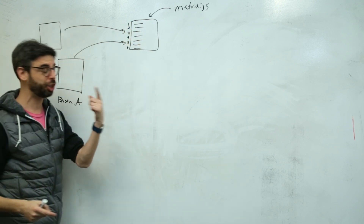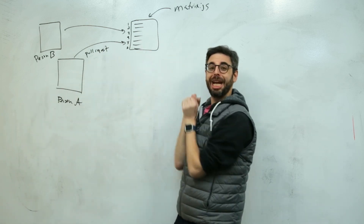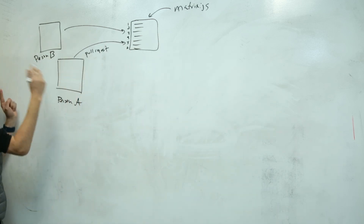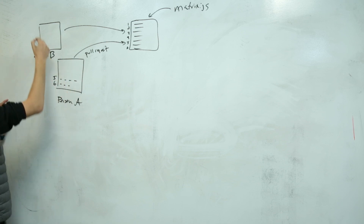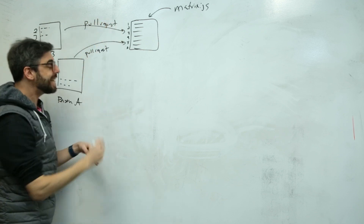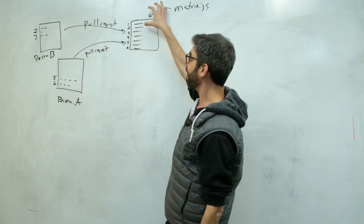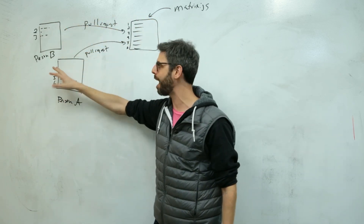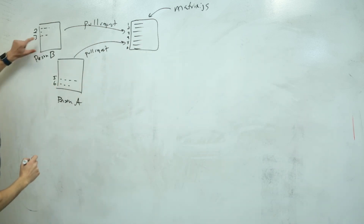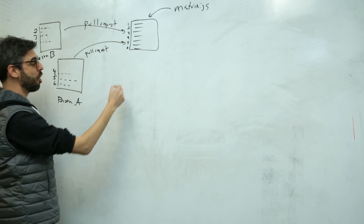Now if person A makes a change and submits a pull request — meaning, 'hey library, please pull my changes, I want to push my changes to you' — if person A just made changes to lines five and six, and person B made changes to lines two and three, the git system is smart enough to figure out how to pull both of these things in with no conflicts. Because there are no conflicts — you can accept changes to lines two and three at the same time as lines five and six. However, if person B makes a change to line four and person A also makes a change to line four, then we have what's known as a conflict.